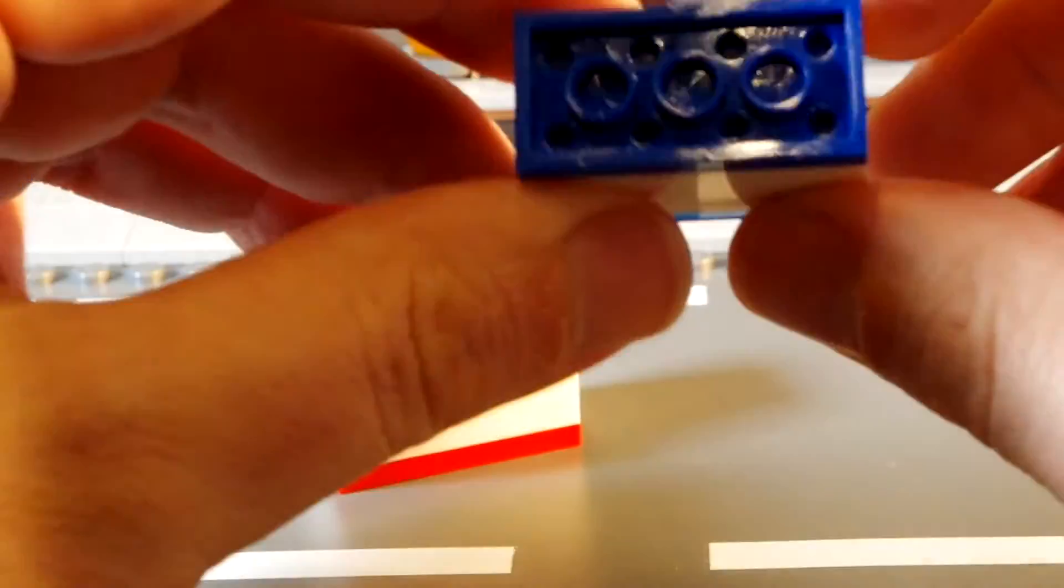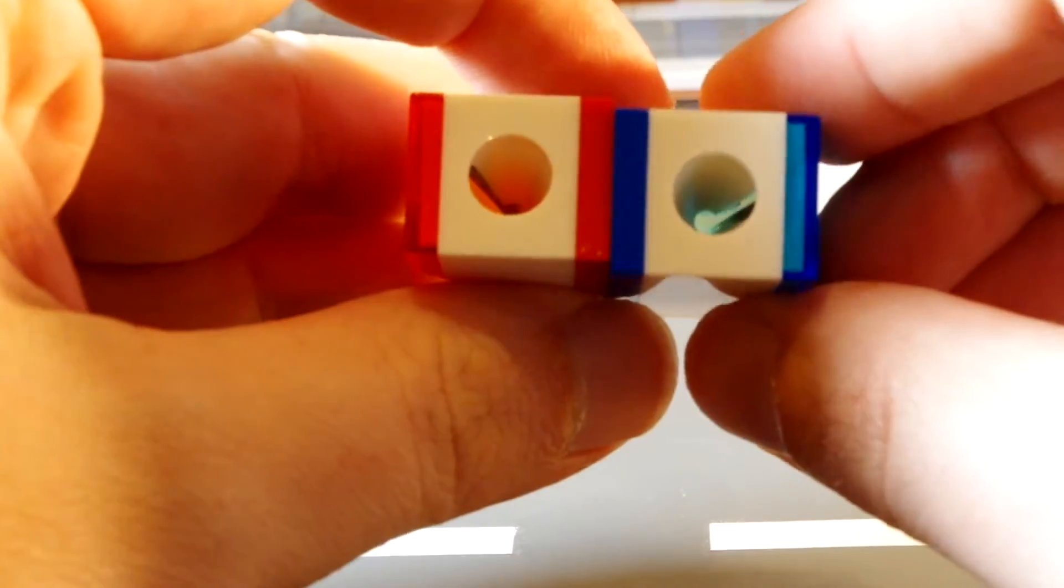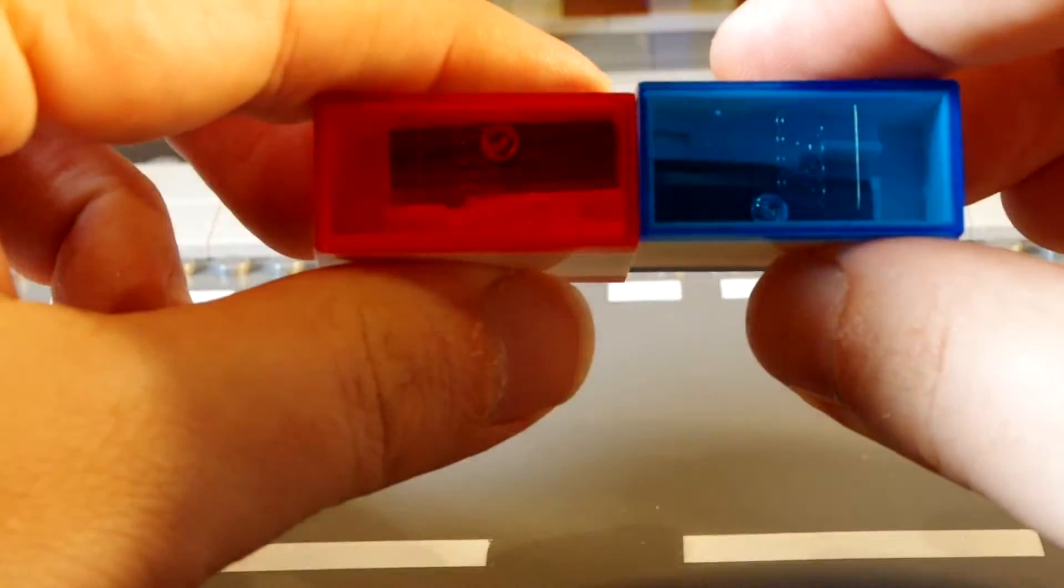It does have a 4x2 plate on the bottom so you can attach it to whatever you want really. So there's not much more I could say about these except you get a blue one and a red one. I've seen them in different colours so shop around and see what you can find.